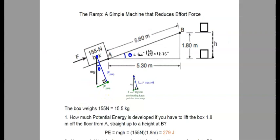The first question that we will ask is: how much potential energy is developed if you have to lift the box 1.8 meters off the floor from point A straight up to point B? That's a very simple equation with PE equals MGH. So you take the 155 Newtons, which is the MG, and you multiply it by the 1.8, giving you 279 joules.